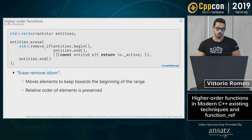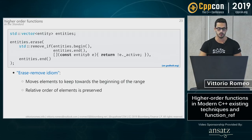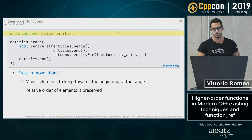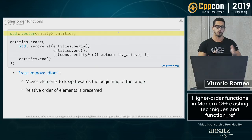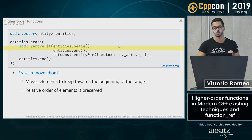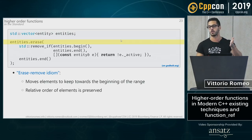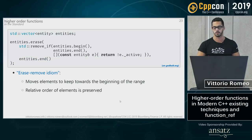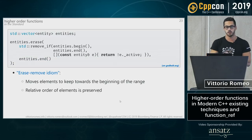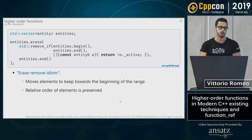One idiom taught to beginners, especially for game or entity management, is the erase-remove idiom. If you have a vector of entities and want to efficiently remove all the dead ones, instead of shifting elements one by one, you combine std::remove_if — which moves elements to keep toward the beginning — with the vector's erase member function. This does just a few swaps and then deletes from the iterator returned by remove_if to the end, giving you only the alive entities.